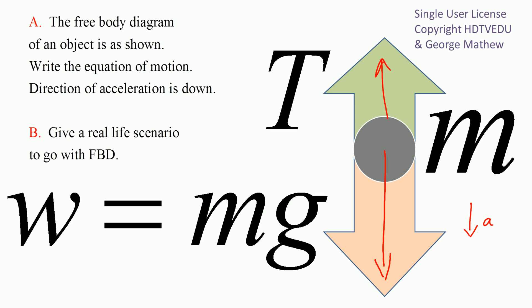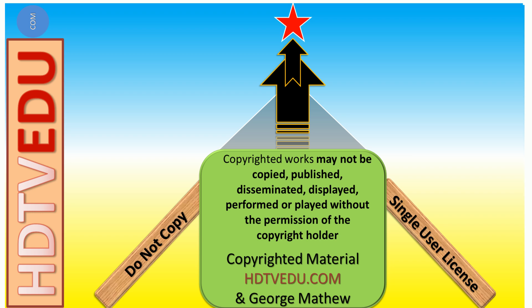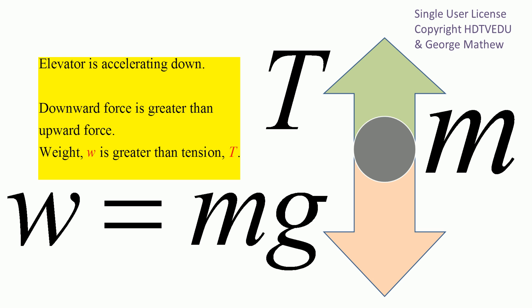Given the lengths of the arrows, the object is accelerating down. The real-life scenario to go with this free body diagram is an elevator accelerating down. If the elevator is accelerating down, there is a net force downward.